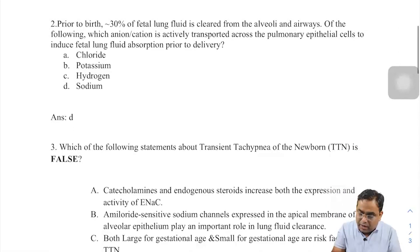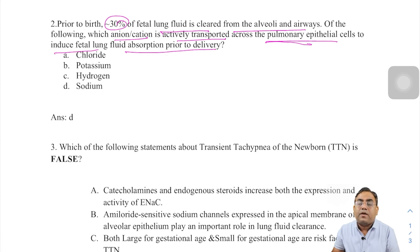Second question: Prior to birth, 30% of fetal lung fluid is cleared from the alveolar airways. Of the following, which anion-cation is actively transported across the pulmonary epithelial cells to induce fetal lung fluid absorption prior to delivery? We discussed that ENAC, the epithelial sodium channel, is responsible for this. The answer will be sodium ion.